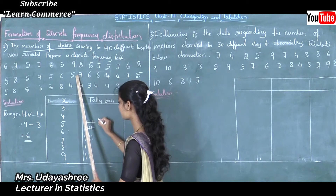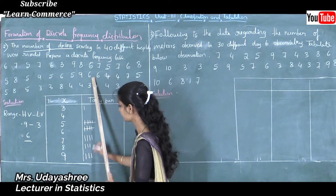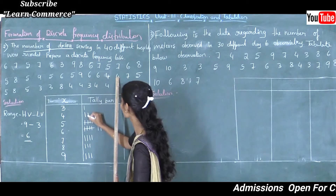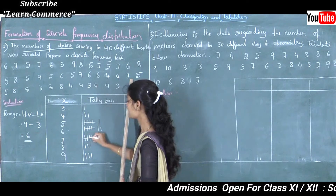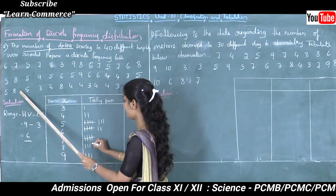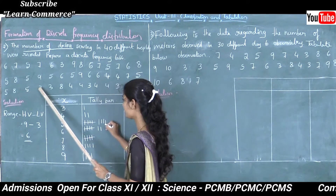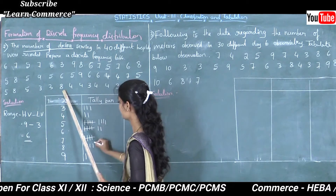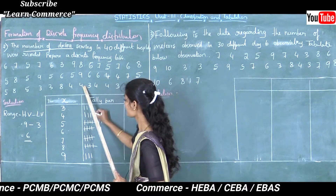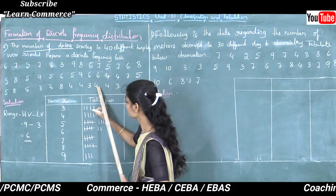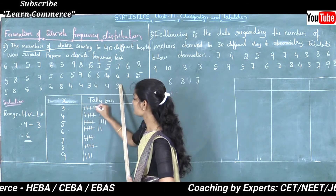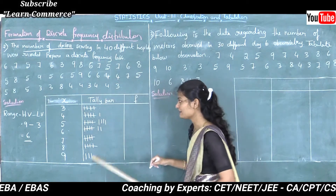Next 5, next 6, next 4. Again 4, then 7. Here 4 marks are over, so the 5th one like this. Next 5, again 5, then 8, next 5, then 3, again 3, then 8. Here 4 marks are over, so the 5th one like this. Next 4, then 3, 4 like this. So 3 has 4 marks — 5th one like this. These are all the tally marks.